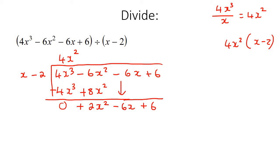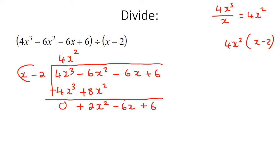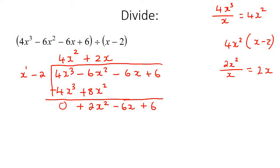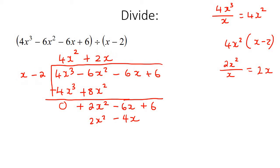Now we start the process all over again. We look for the highest power here — that's x squared — and the highest power in the divisor — that's x. We divide: 2x squared divided by x gives us 2x. So we write plus 2x at the top. Then we take that 2x and multiply it with x minus 2, giving us 2x squared take away 4x. We switch the signs, add everything together — this part cancels out — and negative 6 plus 4 is negative 2.